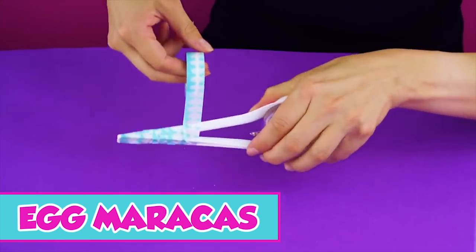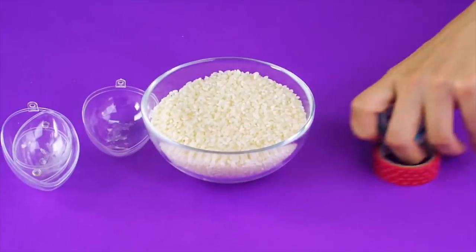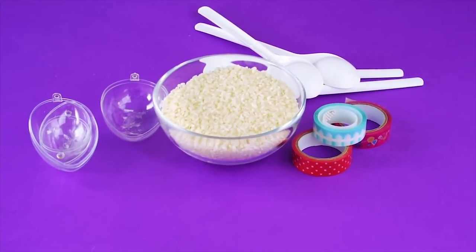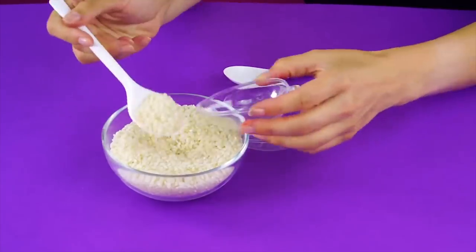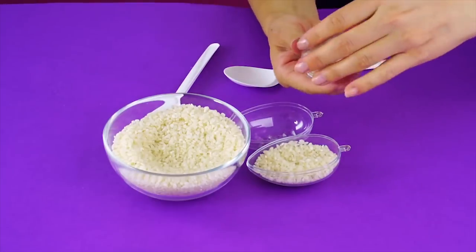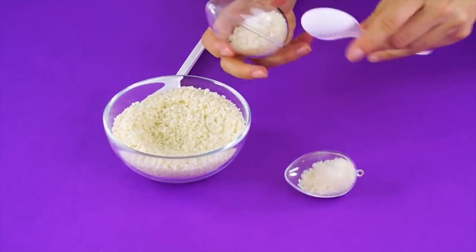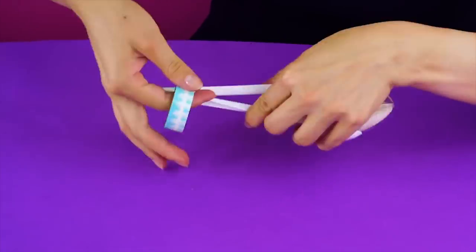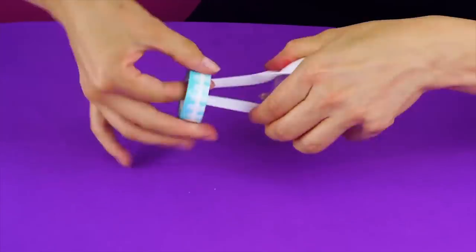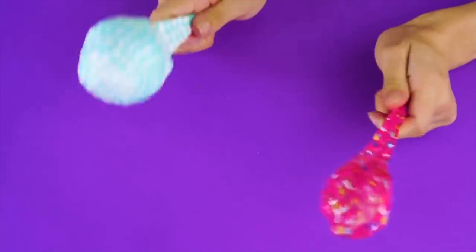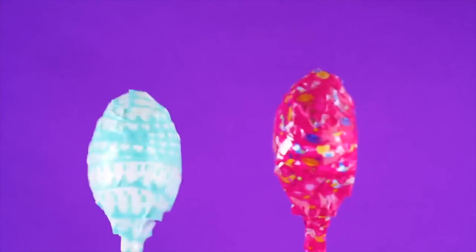Egg maracas. Don't put that rice away yet. It's time to make your own percussion section. You'll also need to grab some colored tape, plastic eggs, and spoons. Start by filling one half of your egg with rice. Seal the eggs shut, and put the concave side of your spoons on either side of the plastic egg. Starting from the bottom, wrap everything in tape. Once you get all the way to the top, give these festive little maracas a shake.